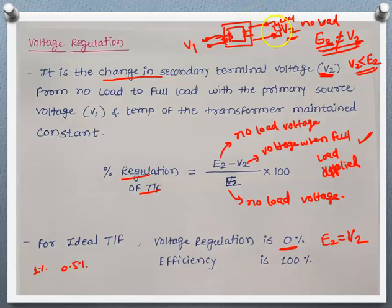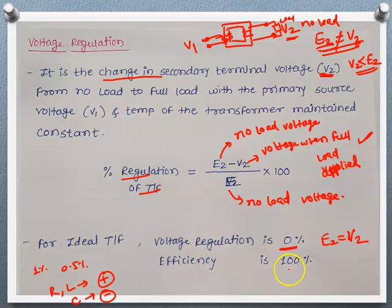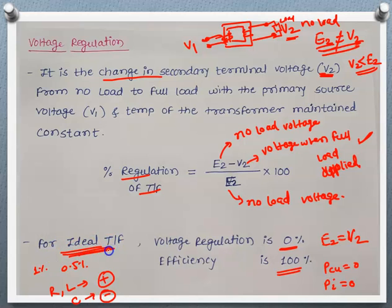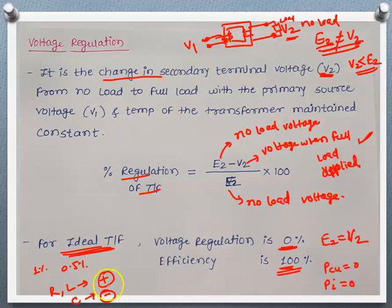If the load is resistive or inductive, we have positive voltage regulation. In case of capacitive load, we get negative voltage regulation. For an ideal transformer, efficiency is 100% as copper losses and iron losses are both 0. But in case of a practical transformer, efficiency is less than 100% and voltage regulation is greater than or less than 0%, depending on the load connected.